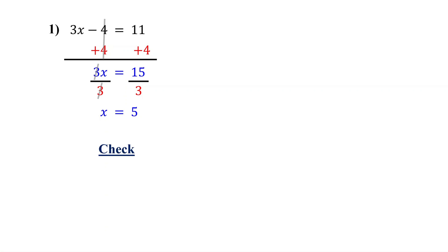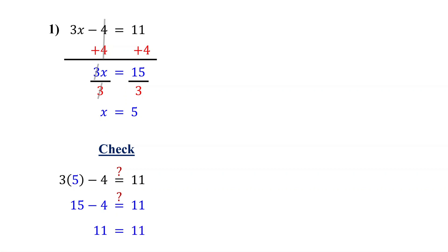To check our solution, we plug in 5 for x in the original equation and simplify. 3 times 5 is 15. 15 minus 4 is 11. As you can see, both sides of the equation are equal, confirming that 5 is indeed the solution. Try this one.